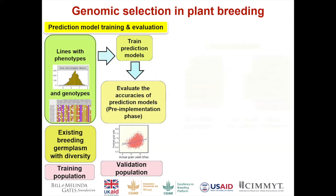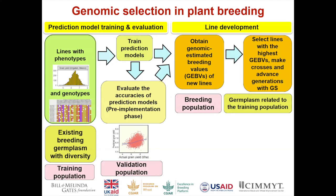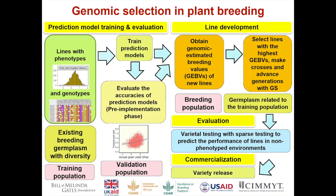The next phase is the line development phase where you actually use the genomic estimated breeding values to make crosses, make selections, and advance generations. After that, you can also use GS for evaluating or sparse testing of varieties — some lines in some environments, predicting performance in different environments. The last stage is commercialization. What I'll be describing today is mostly about the pre-implementation phase and evaluation, and what we hope to do in the future using real GEBVs for selections and making crosses.